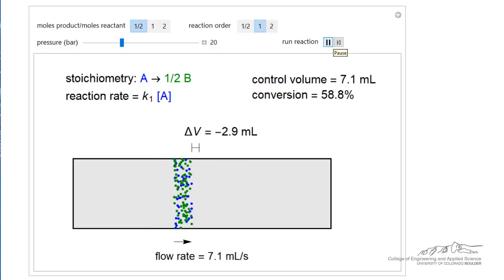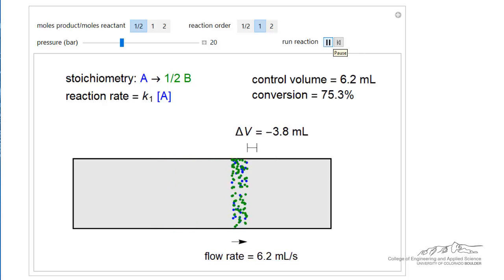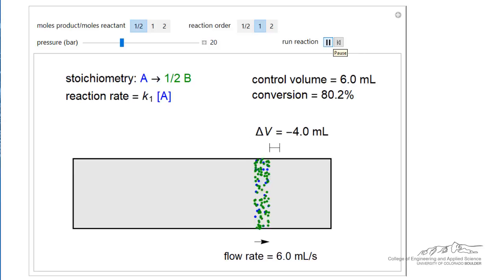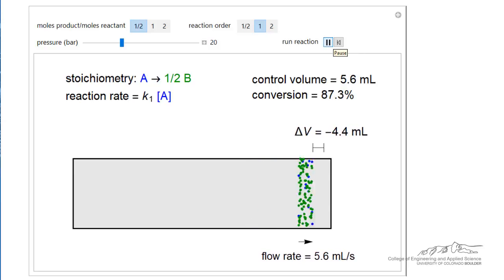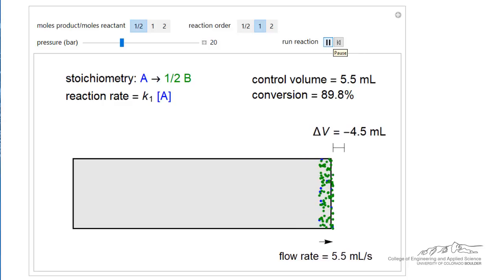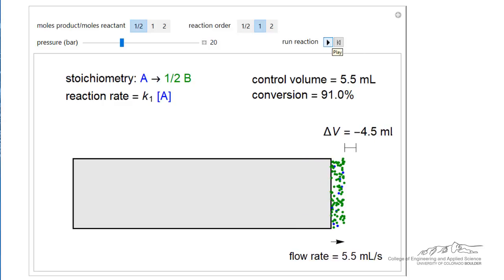So this means the volumetric flow rate is decreasing because we have fewer moles. And now one consequence of this, since we have set the simulation up so the initial rate is the same for these different reactions at 10 bar, you notice that we have a higher conversion because the molecules spent more time in the reactor. They're slowing down. The flow rate is slower so they have more time to react.